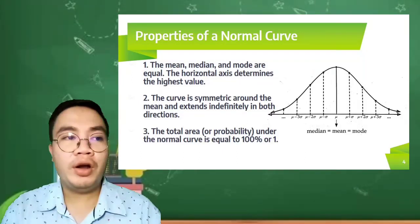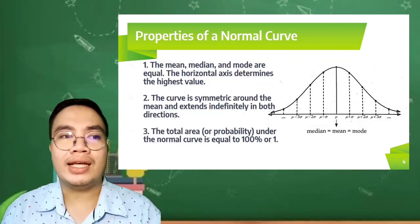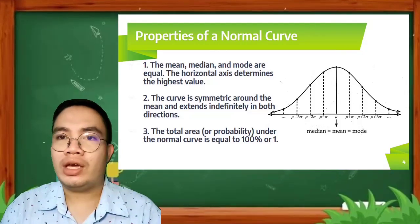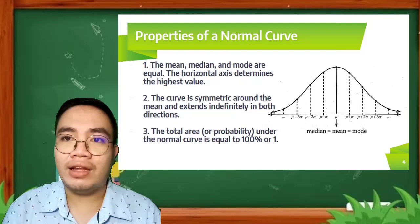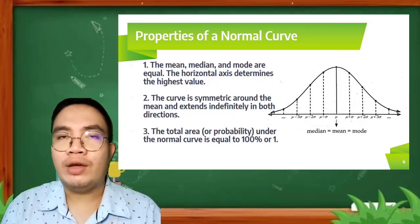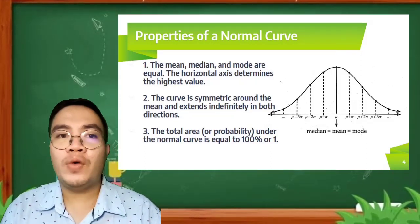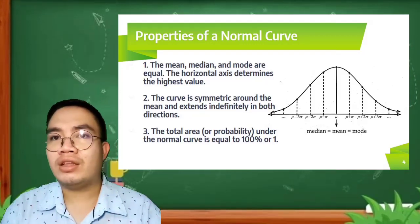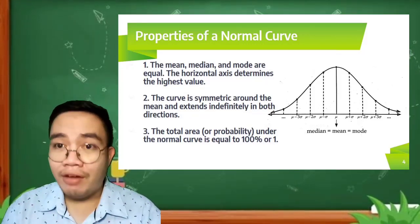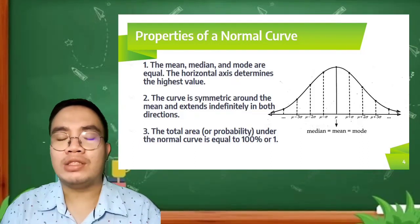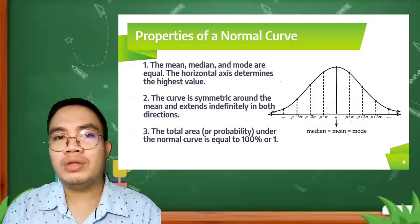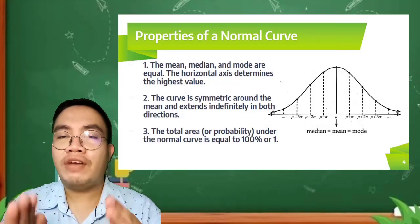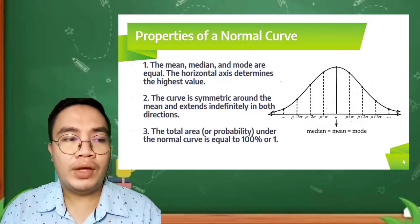Secondly, the curve is symmetric around the mean and extends indefinitely in both directions. It extends going to the left and going to the right. However, those values going to the right of our table are the values that are positive above our mean value, and those values going to the left are the values that are negative or lower than our mean value.